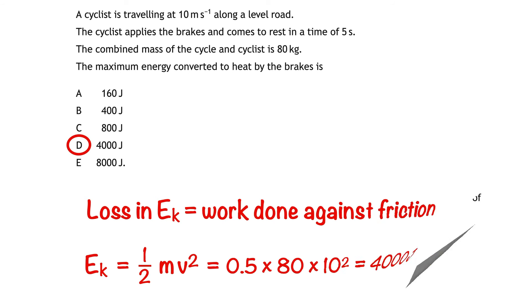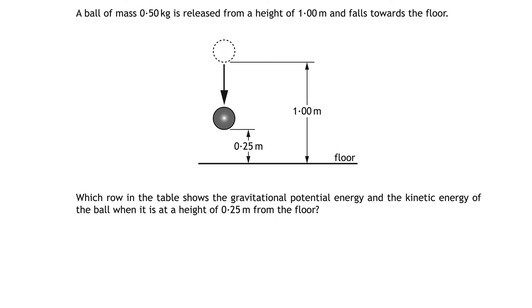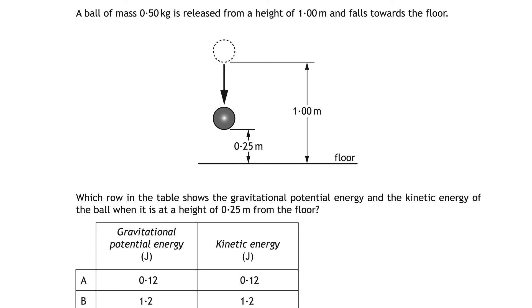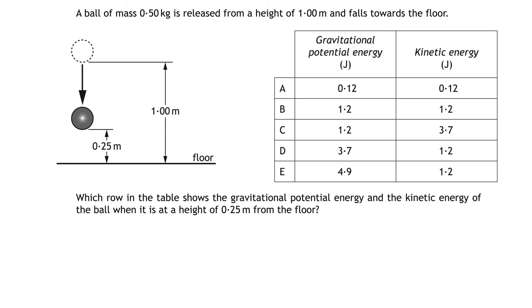The next question is also about conservation of energy except this time it's all about gravitational potential energy converting to kinetic energy. A ball of mass 0.50 kilograms is released from a height of 1.00 meters and falls towards the floor. Which row on the table shows the gravitational potential energy and the kinetic energy of the ball when it's at a height of 0.25 meters from the floor. Here's the table and here it is next to the diagram. If you're not 100% sure how to get to the answer in a multiple choice question like this one a little knowledge might be enough to eliminate some wrong answers.